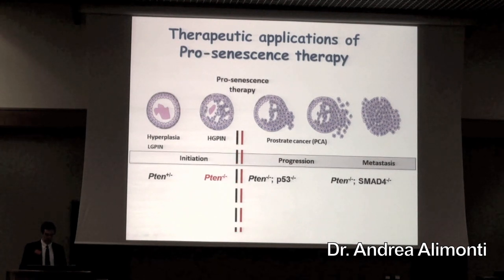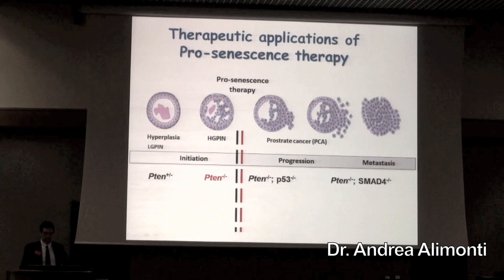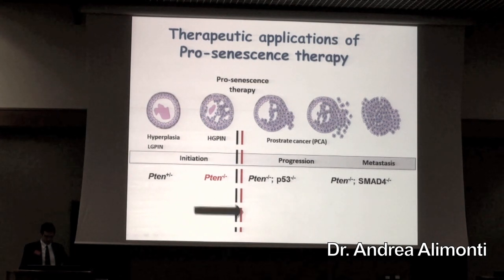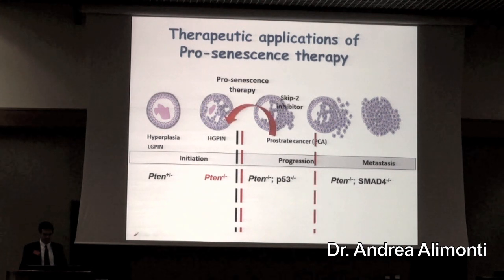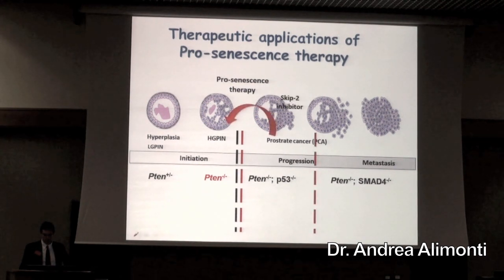This slide shows you that pro-senescent therapy of cancer is just to reinforce this barrier, which can happen in some specific tumors, so that the tumor cannot progress, and we don't develop, for instance, metastases or aggressive types of tumor.